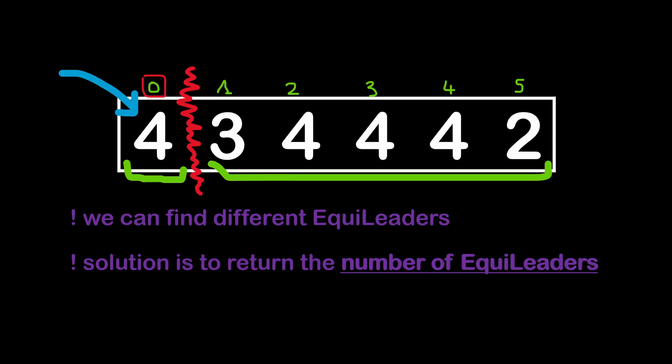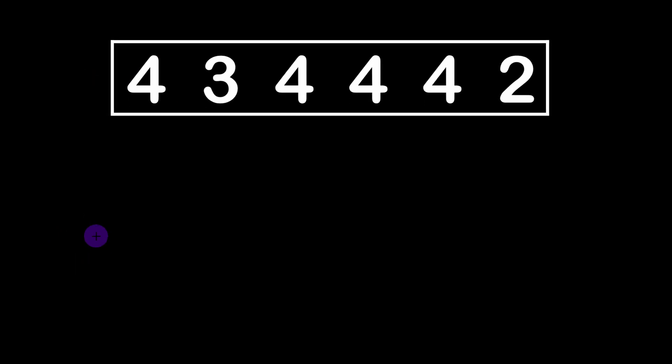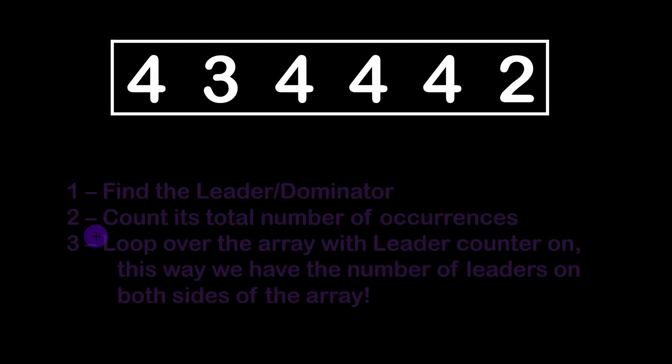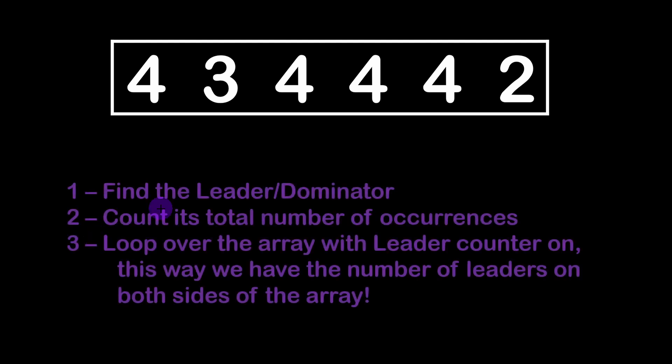We can find different equileaders in the same array, and the solution is to return the total number of equileaders. I'm not going to go through the brute-force approach — if you've followed my previous videos, you know there's always a brute method that gives correct results but won't pass on performance. So we'll present the correct and efficient algorithm. First, we find the leader of the array, as shown in the previous exercise.